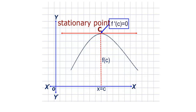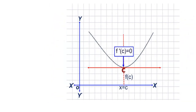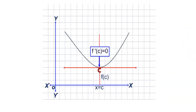Consider this figure now. In this figure, we see that in the left neighborhood of c, the function is decreasing, and in the right neighborhood the function is increasing. However, at x equal to c, the function is neither increasing nor decreasing. In fact, we say that the point is stationary, and hence we call this a stationary point.